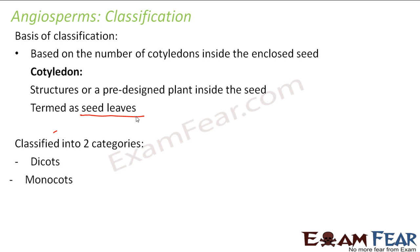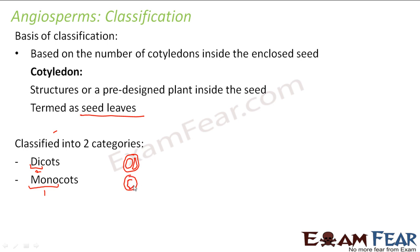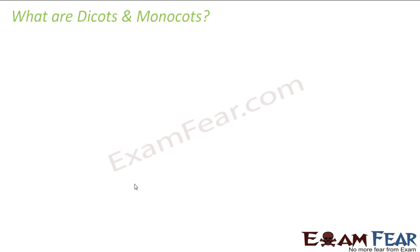Based on this, plants were classified into two categories: dicots and monocots. The name itself explains it — 'di' means two and 'mono' means one. Dicots are those angiosperms which have two cotyledons inside the seed, and monocots are those which have just one cotyledon inside the seed.